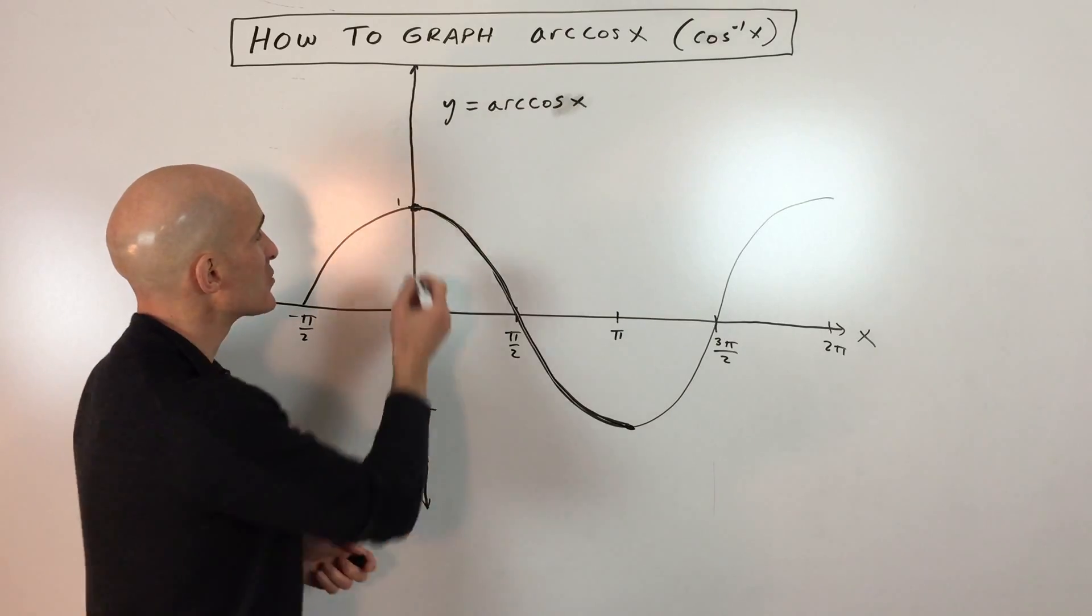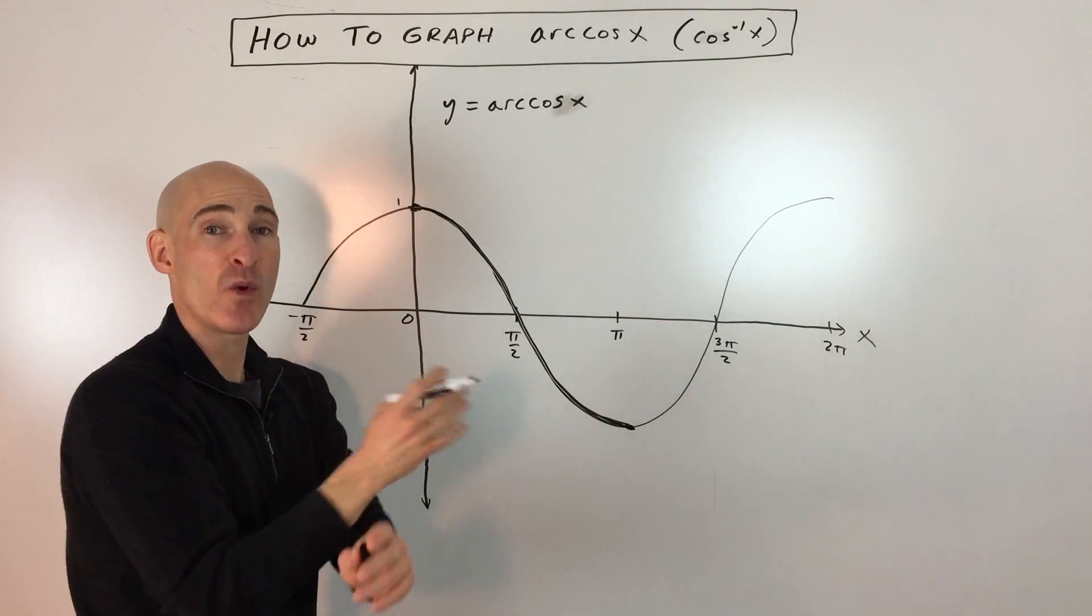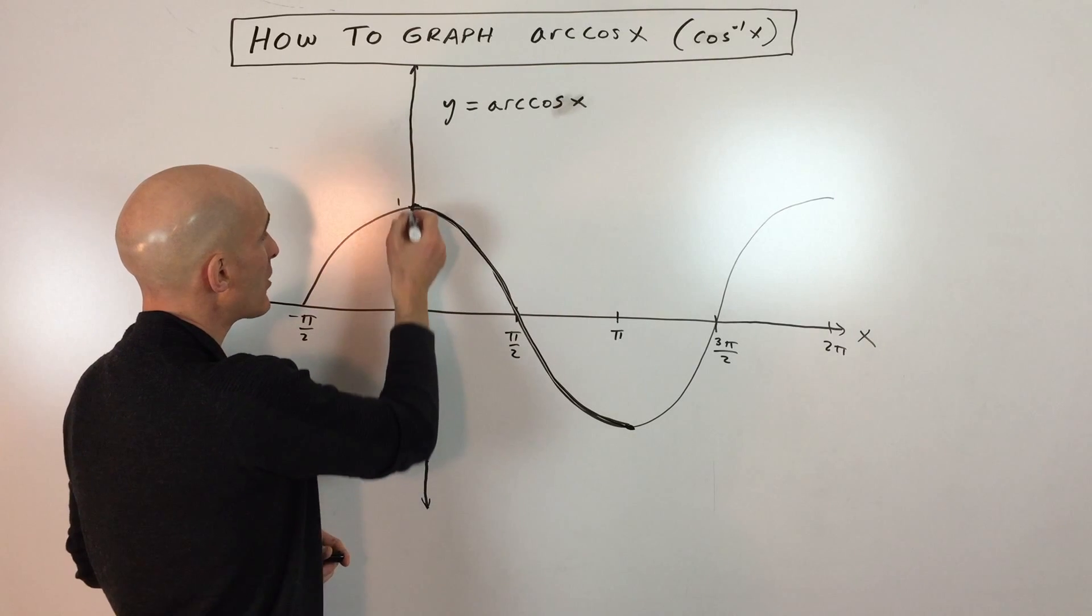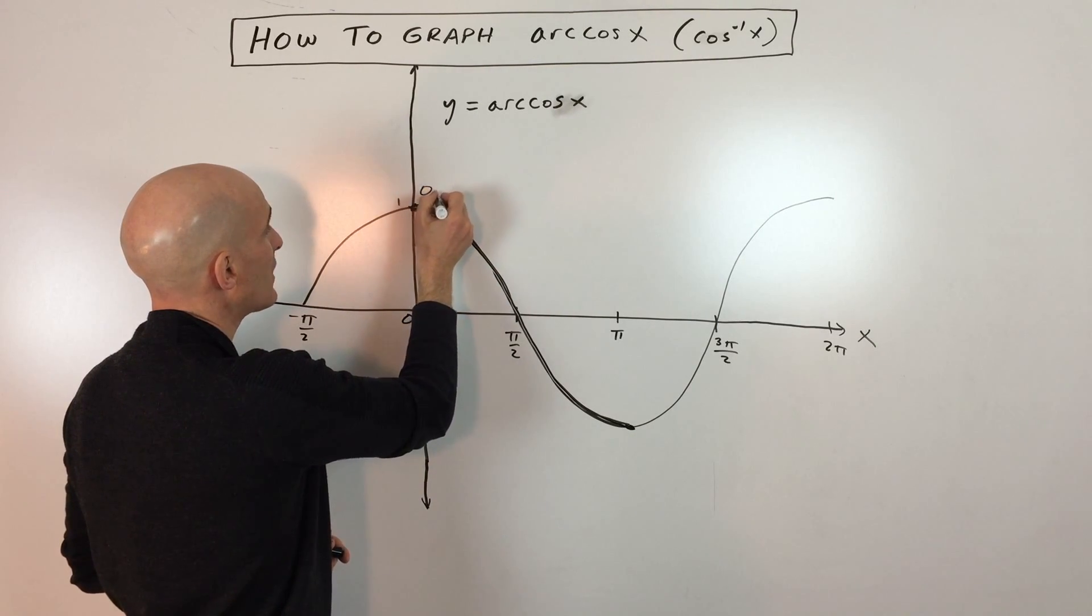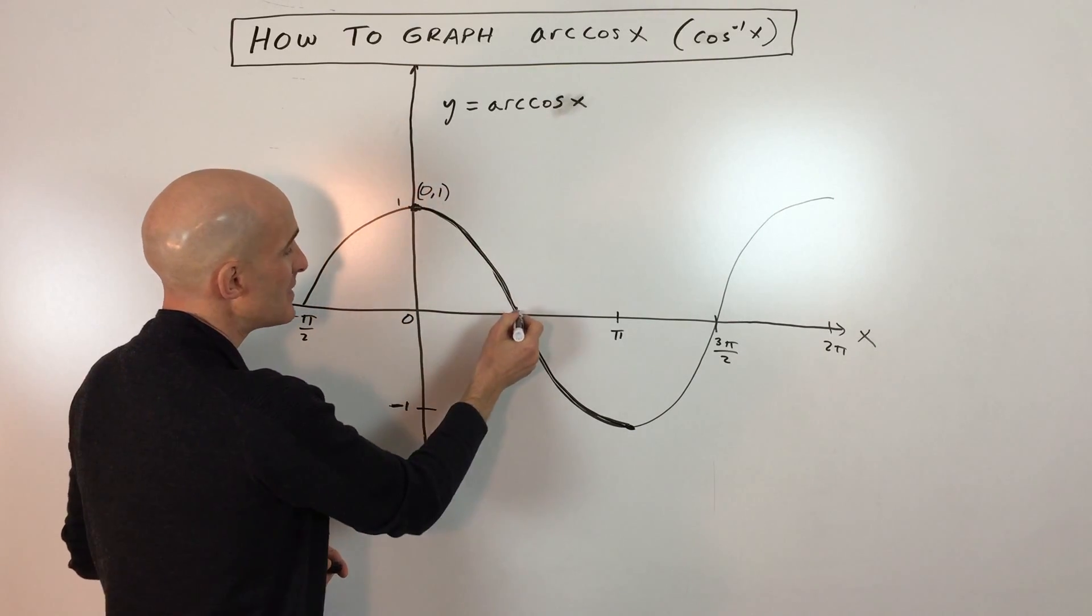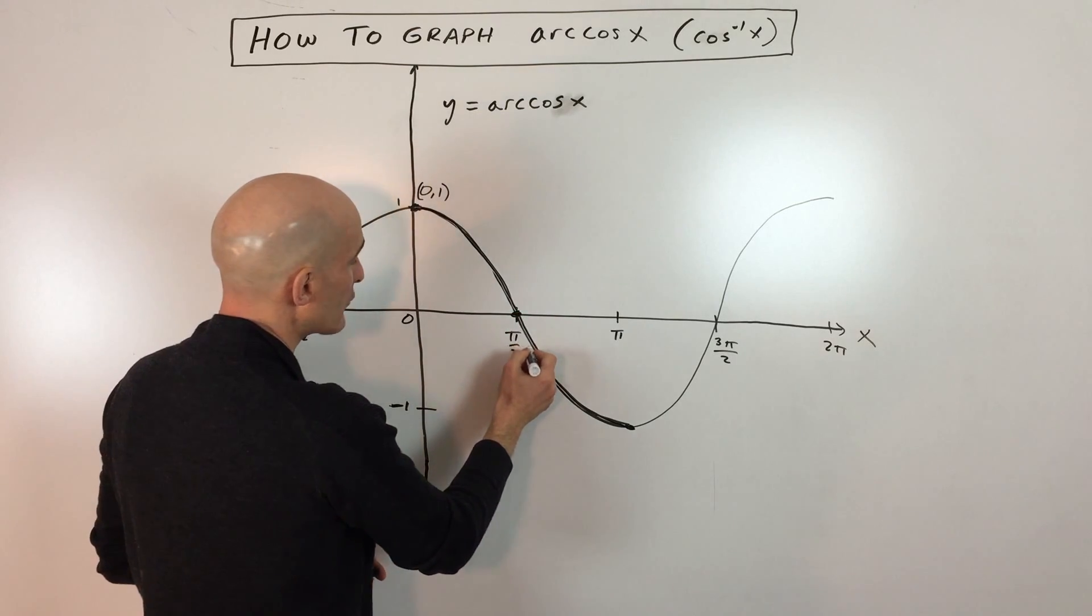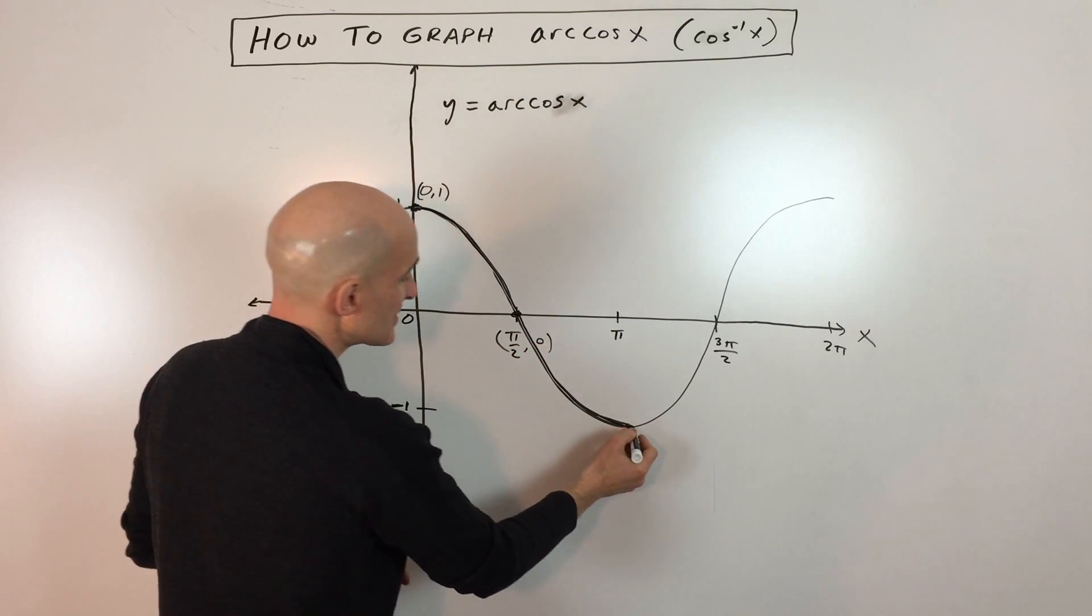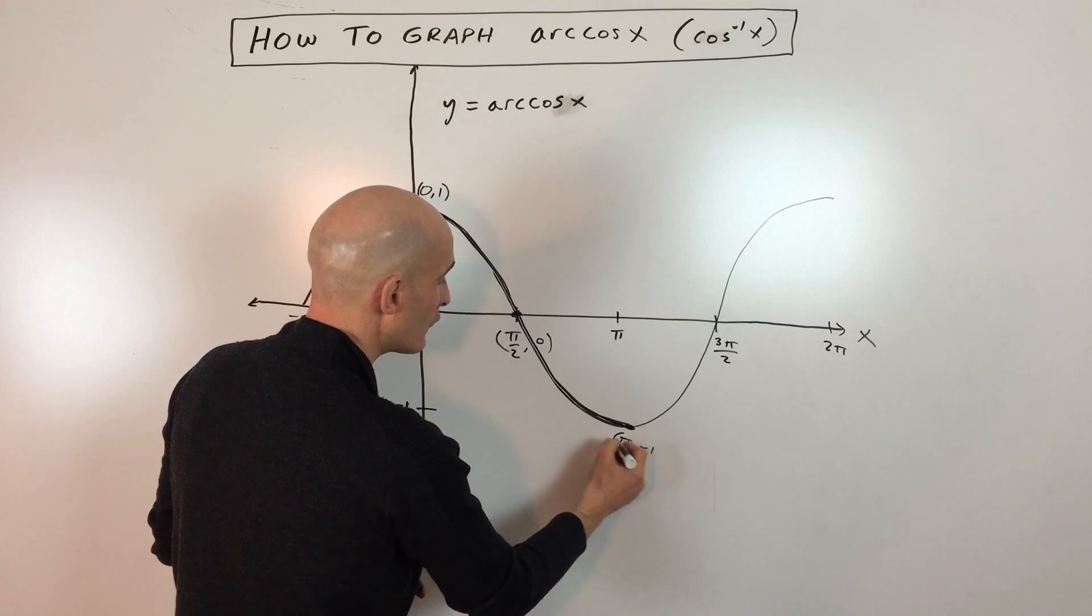And so what we're going to do here is we're just going to locate these points, and we're going to interchange the x and the y and graph those points. So this point right here is the point zero comma one. This key point right here is pi over two comma zero. And then this key point over here is pi comma negative one.